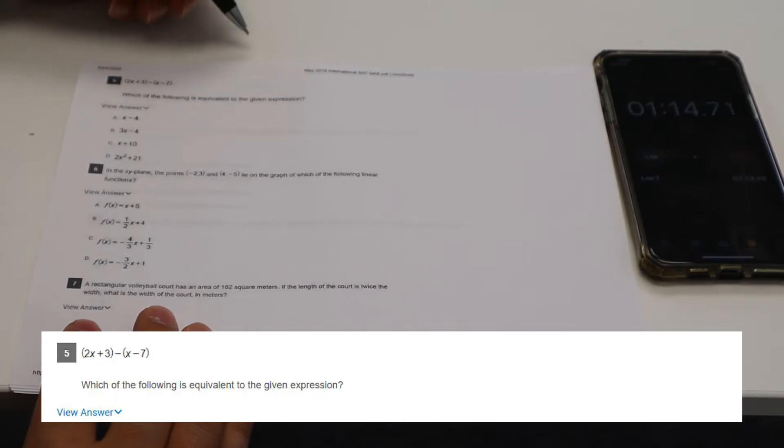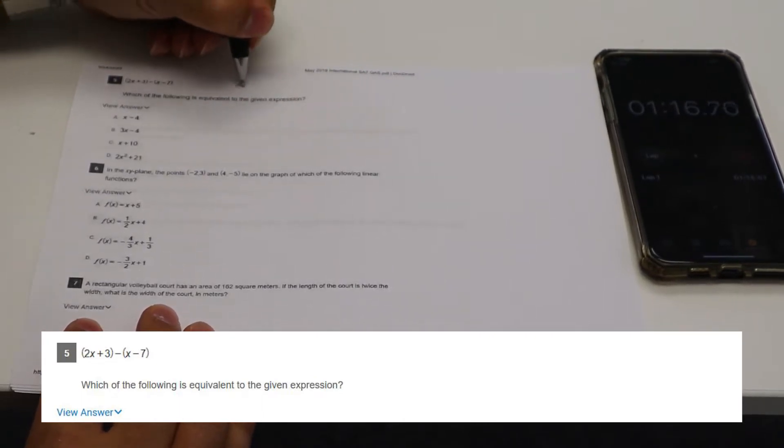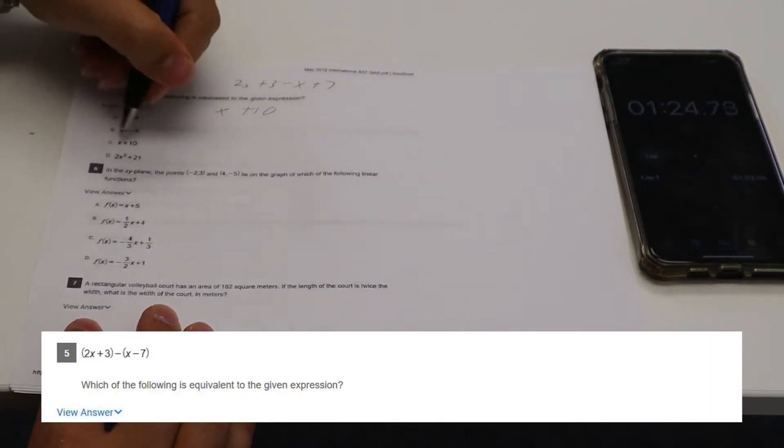To the given expression. Let's see. So we have two X plus three minus X plus seven. So that's going to be X plus 10, C.